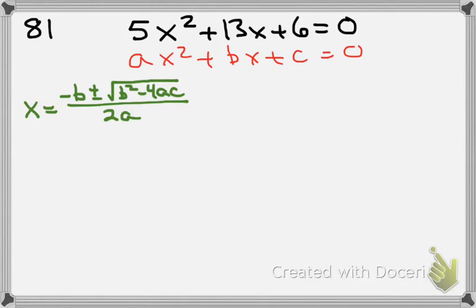Okay, so A is 5, B is 13, and C is 6. Just plug it into our quadratic formula.